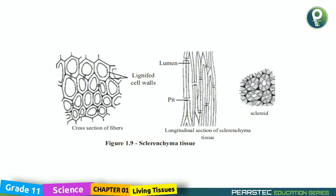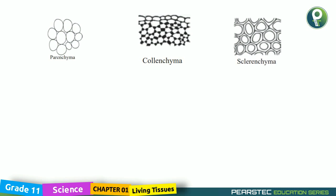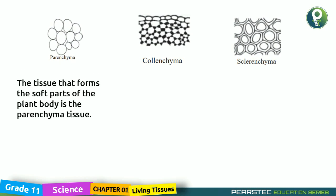The cross section of a Sclerenchyma fiber looks like this. It has Lignified Cell Walls, a Lumen, and Pits. The longitudinal section of Sclerenchyma Tissue is also like this — we will see that further. Now we are going to learn about Parenchyma, Collenchyma, and Sclerenchyma together so that we will get a better understanding of all these features.